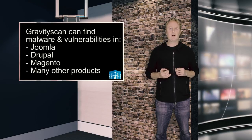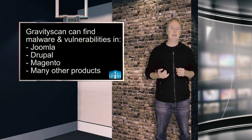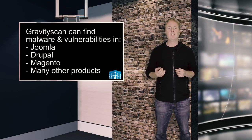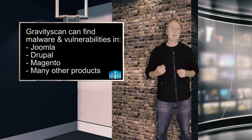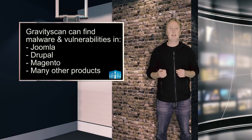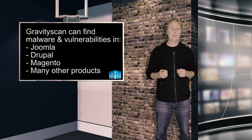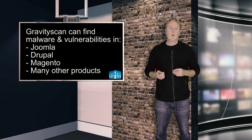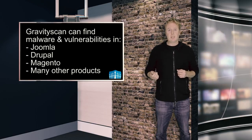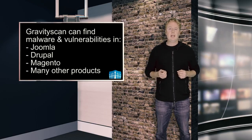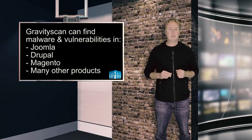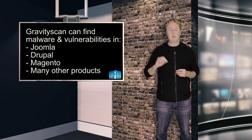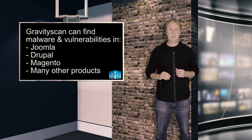To get the best results from Gravity Scan, you should install the Gravity Scan Accelerator — that'll give you a much faster scan and it'll also scan your source code. If you do get any results with Gravity Scan, work through them just like you did the WordFence results and resolve them one by one as you fix each item.